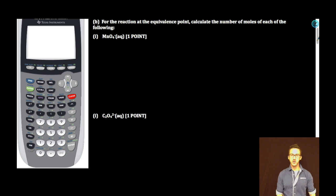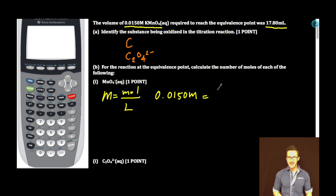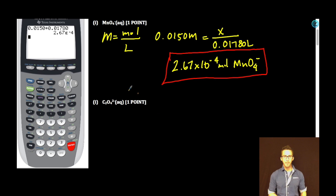Part B. For the reaction at the equivalence point, calculate the number of moles of each of the following. B part I, permanganate ion. We are using 0.0150 molar potassium permanganate, and we used 17.80 mL of it. We're going to use our molarity equation to solve for number of moles. Plug in the molarity of 0.0150 molar times our volume in liters, which is 0.01780. Calculator time, 0.0150 times 0.01780. Using correct significant figures, 2.67 times 10 to the minus 4 moles of permanganate.